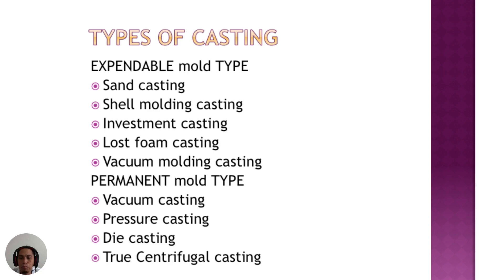The permanent mold means that the mold shape is permanently rigid and repetitively used. The mold material is made of hardened steel. The types of permanent mold include vacuum casting, pressure casting, die casting, and centrifugal casting.